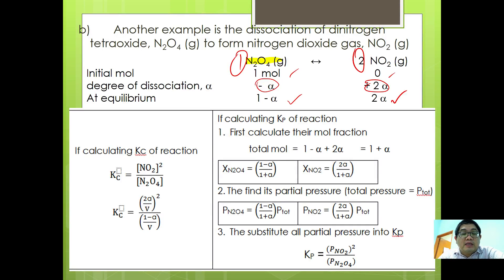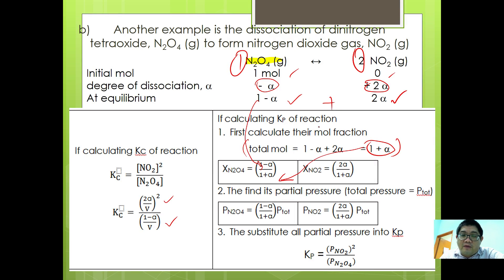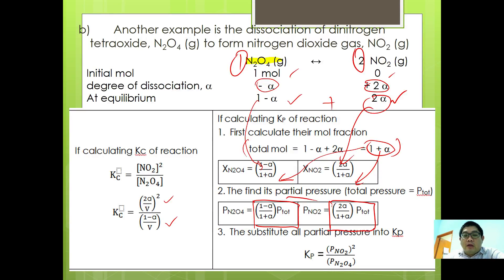To calculate Kc, we use 2 alpha over volume, squared, divided by 1 minus alpha over volume. For Kp, first calculate the total mole: 1 minus alpha plus 2 alpha gives 1 plus alpha. Mole fractions are (1 minus alpha) over (1 plus alpha) for N2O4, and 2 alpha over (1 plus alpha) for NO2. The partial pressure of N2O4 is (1 minus alpha) over (1 plus alpha) times P total, and partial pressure of NO2 is 2 alpha over (1 plus alpha) times P total. Substituting into Kp gives: Kp equals partial pressure of NO2 squared over partial pressure of N2O4.